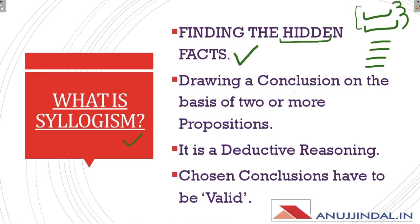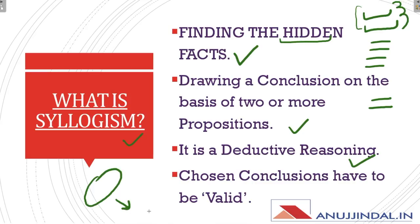Then comes drawing a conclusion on the basis of two or more propositions. In syllogism, you have two statements and you have to draw conclusions — which means drawing a conclusion on the basis of the two given propositions. Thirdly, it is a deductive reasoning, because you have to subtract some facts from the propositions. This is why it is called deductive reasoning, which means going from general to particular, going from general to something specific.